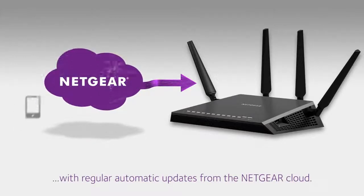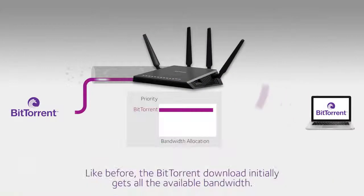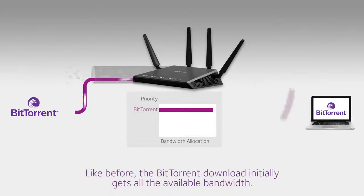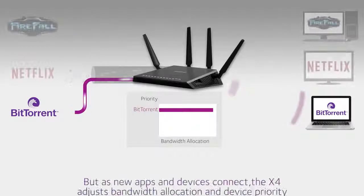Now let's see the difference dynamic QoS makes. One click in the X4's user interface turns on the router's dynamic QoS. As before, when the laptop begins the BitTorrent download, the router allocates the available bandwidth for it.